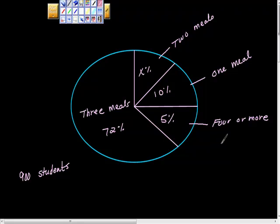Okay, so here's another PSAT practice problem. The graph above shows the results of a survey in which high school students are asked how many meals they typically eat each day. If 900 students responded to the survey, how many of them reported that they typically eat two meals per day? So it's a PSAT or SAT problem, so it's going to have how many parts?